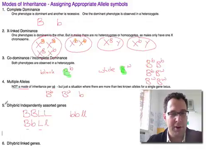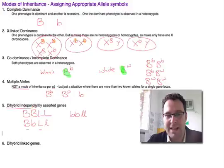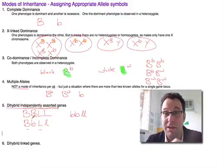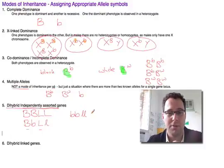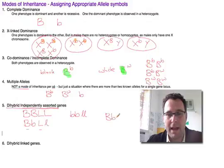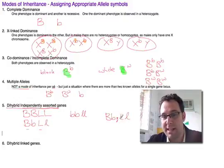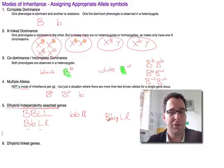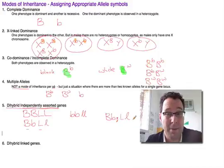If we know the two genes are independently assorted — that is, not on the same chromosome — we indicate that by putting a semicolon between the two genes in the genotype. So if you see a semicolon between the two genes, that means the two genes are on different chromosomes and assort independently.